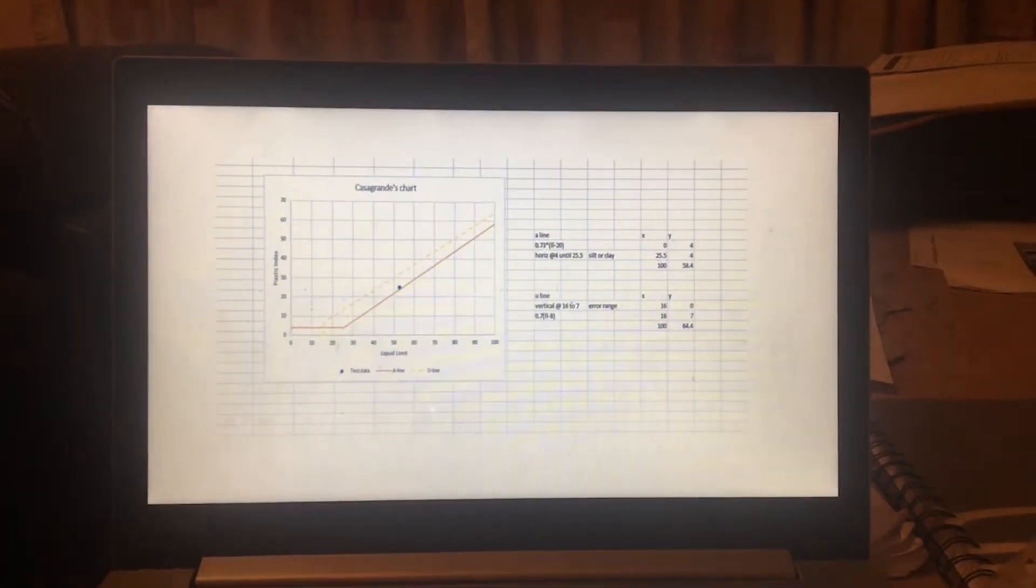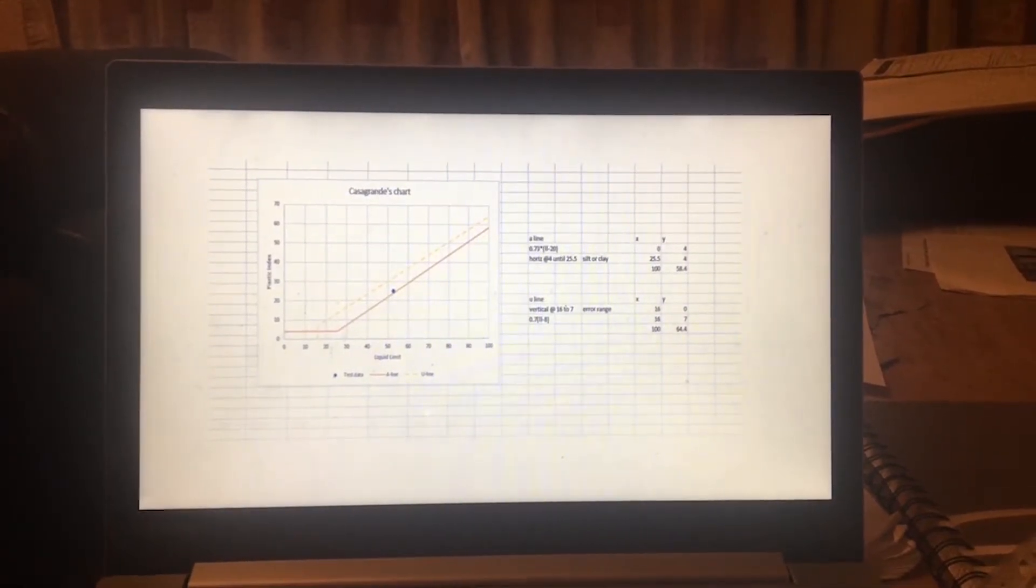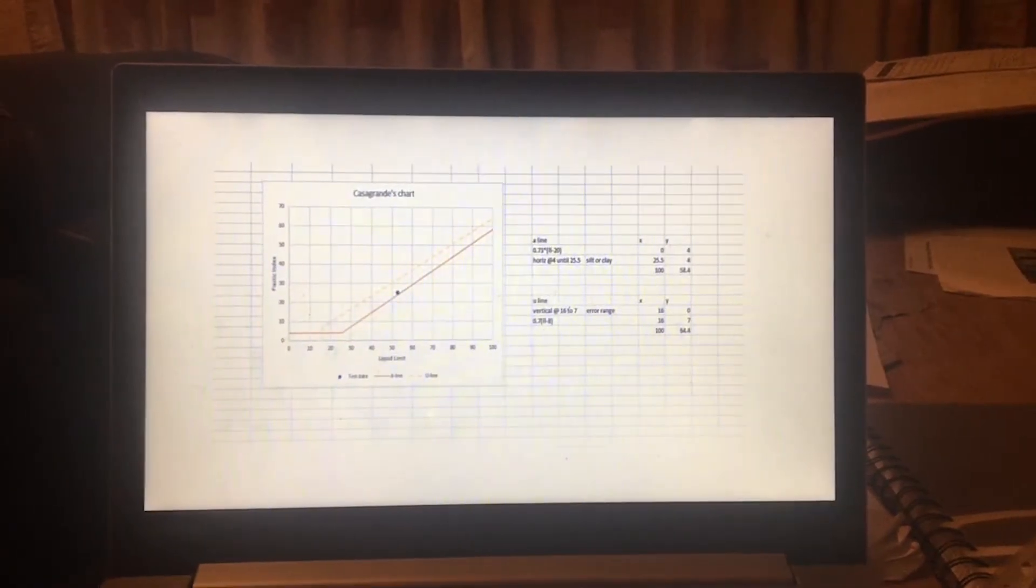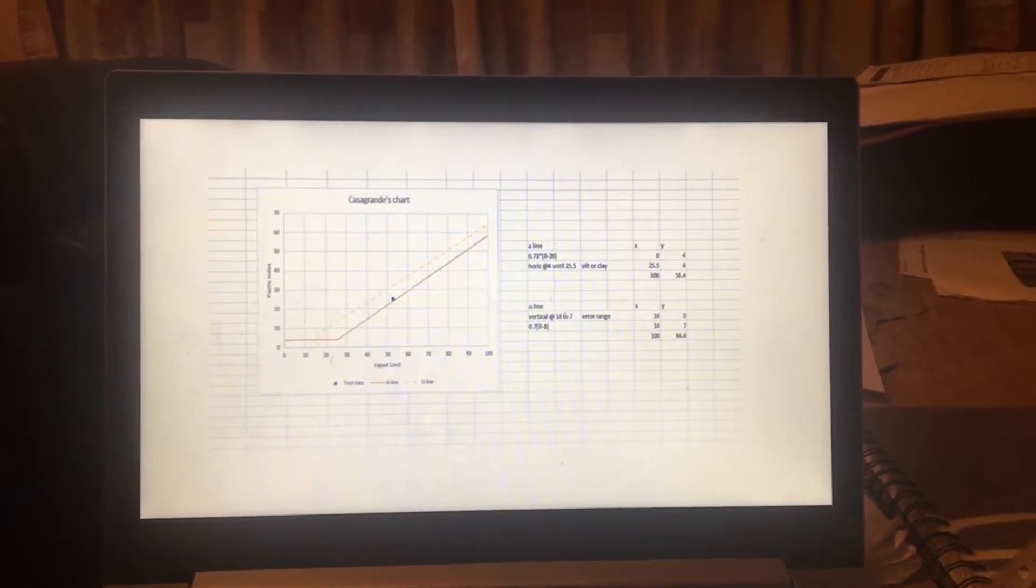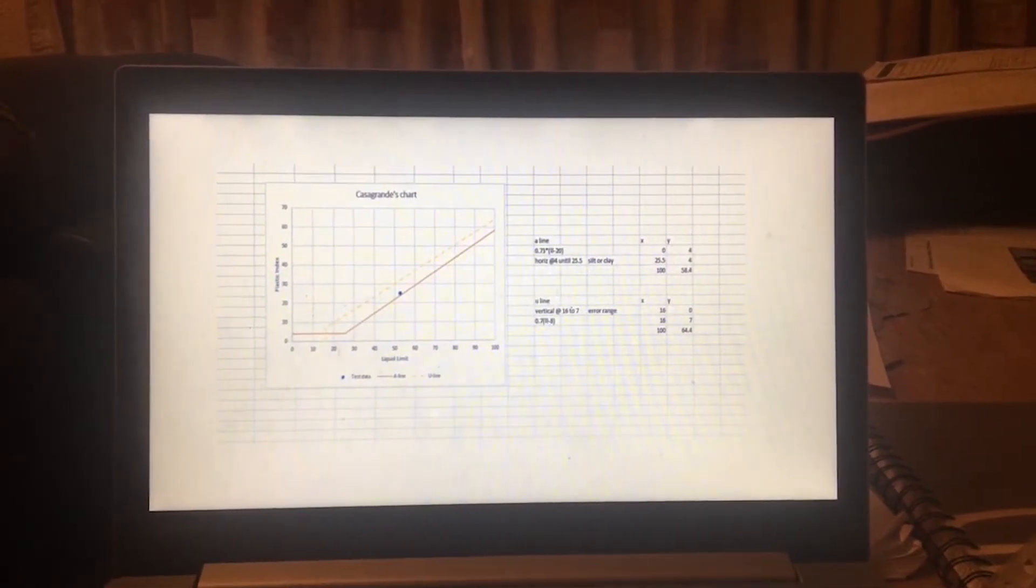Next was the Atterberg limits test. As our soil is above the A line and past 50 on the liquid limit, we can assume that there is a high plasticity, therefore there is a significant amount of clay present.